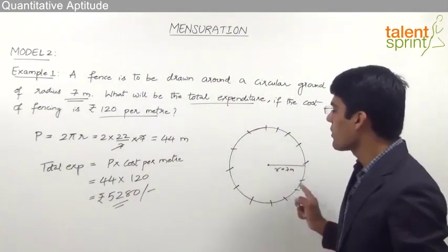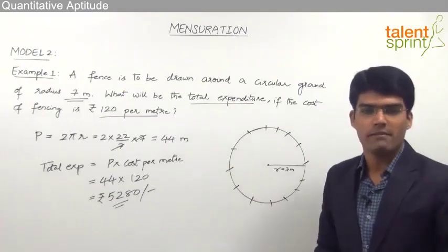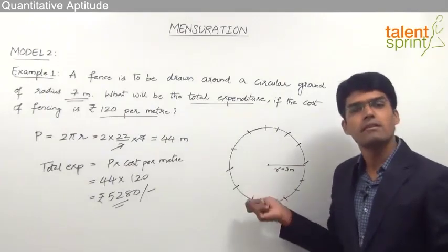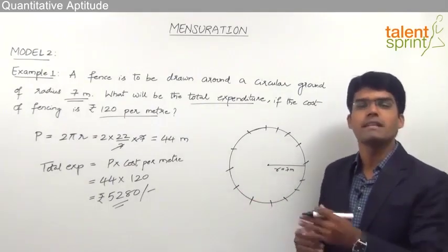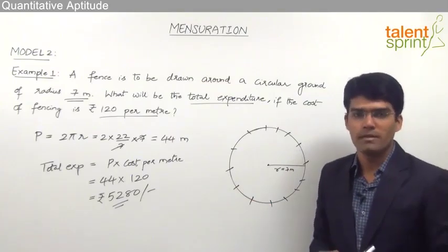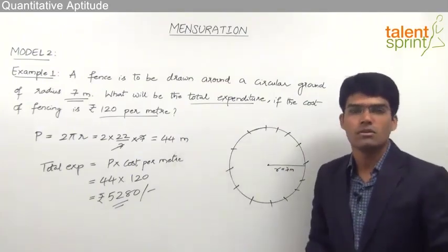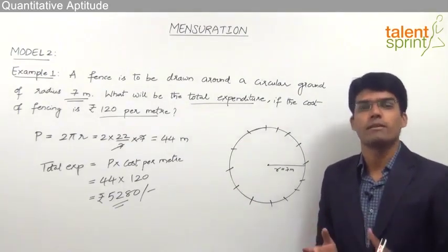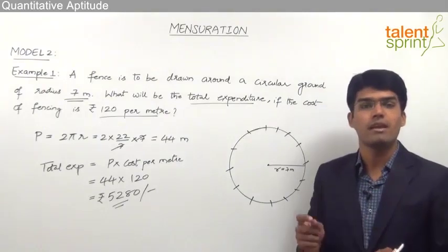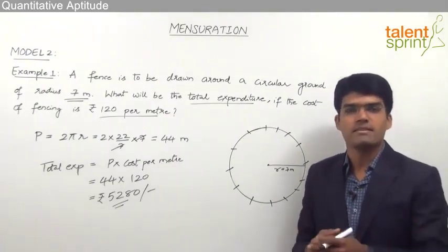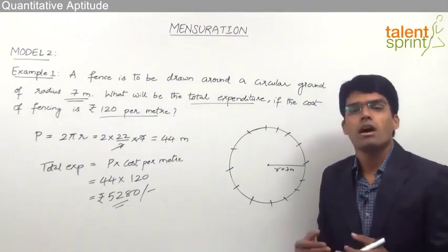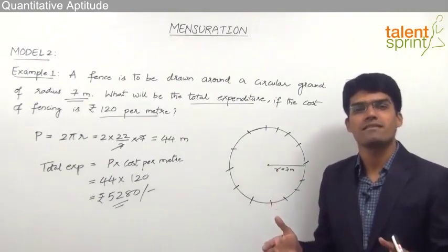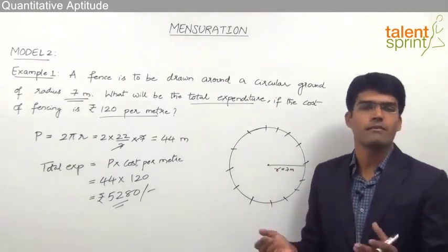By using the formula for the circumference of a circle, we found the answer. Likewise, instead of a circular field, there can be a rectangular, square, or any two-dimensional shape — we find the perimeter and multiply by the cost per meter to get the total fencing cost. It need not always be fencing; it can be any boundary activity, such as constructing a compound wall, where the same approach applies.